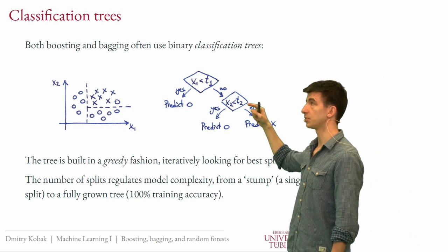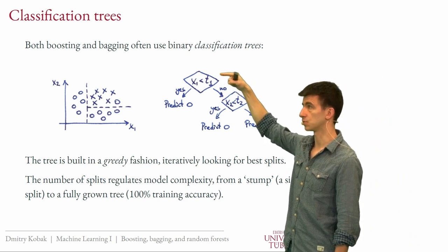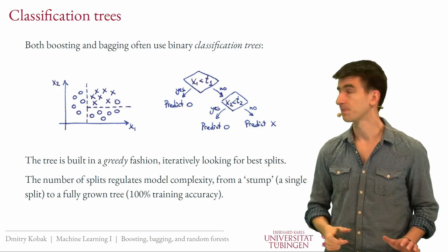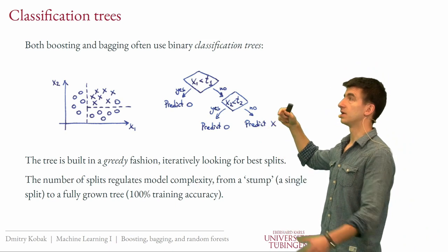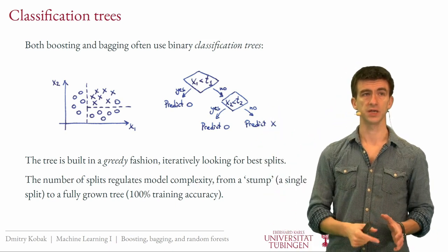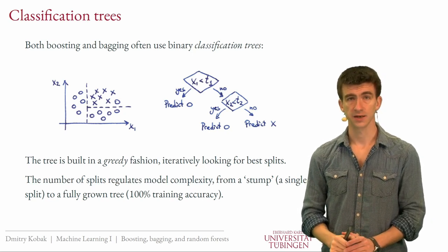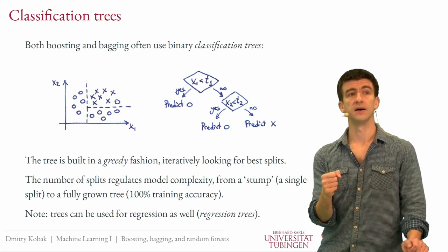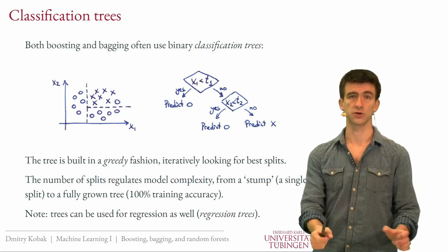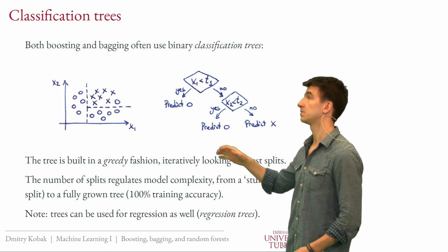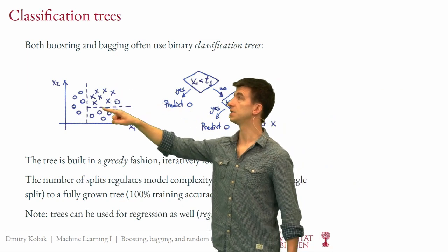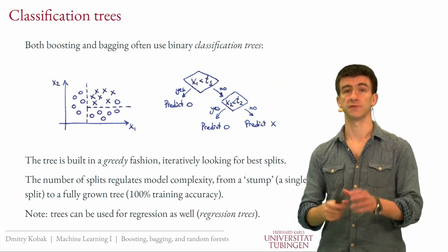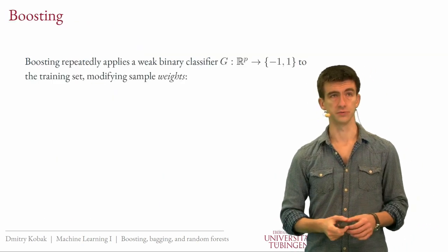The simplest possible tree has just one split — everything on the left is classified as one class and everything on the right is another. This is called a tree stump, and it's a very simplistic model. On the other side of the spectrum you have a fully grown tree, which achieves 100% training set accuracy. You can also use trees for regression — called regression trees — which work similarly, but now in each region you predict a constant value. Today we focus on classification problems with two classes.